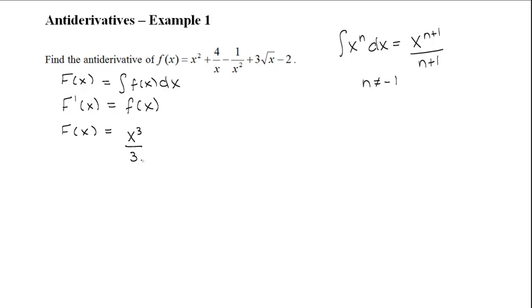For the next term, we have 4 over x. This can also be written as 4 times 1 over x, and 1 over x is the same as x to the power of negative 1. So this term can be written as 4 times x to the power of negative 1. Since the power is negative 1, we can't use the power rule here.